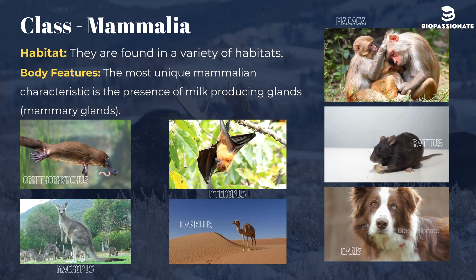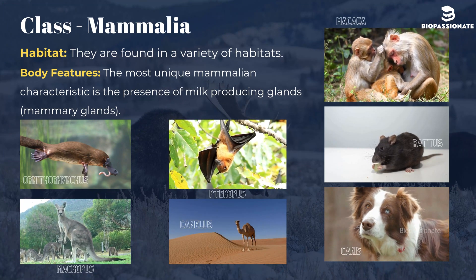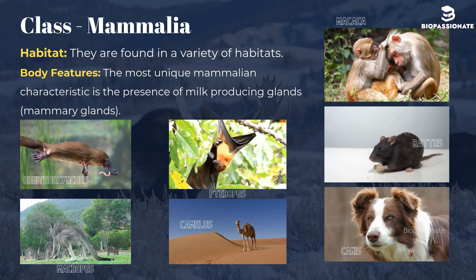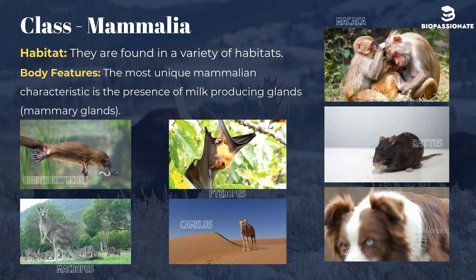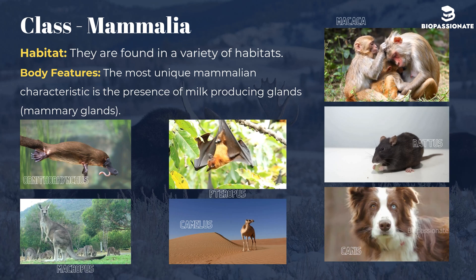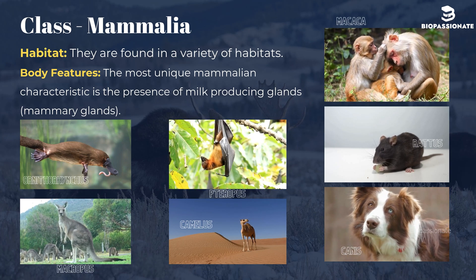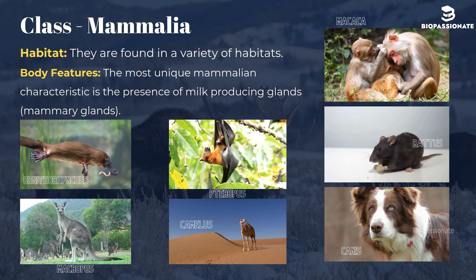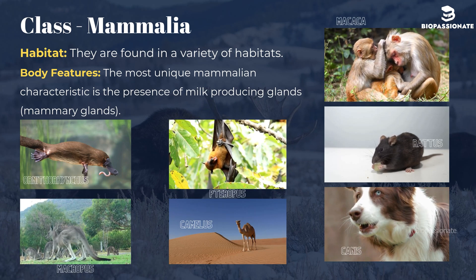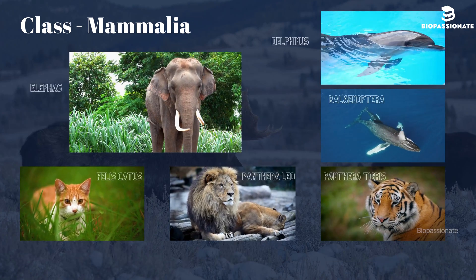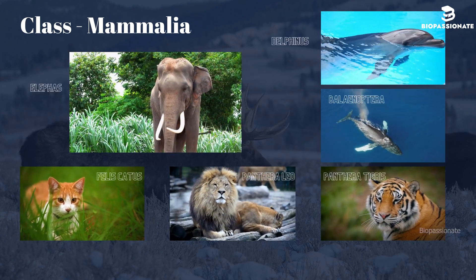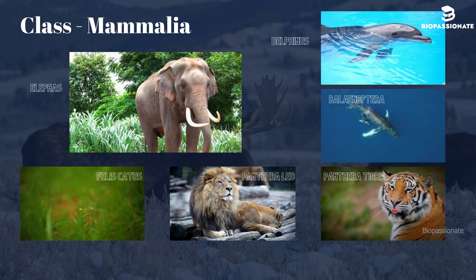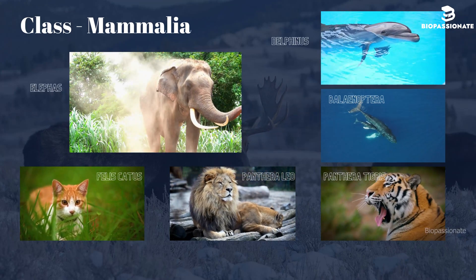Class Mammalia. They are found in a variety of habitats. The most unique mammalian characteristic is the presence of milk-producing mammary glands. Common examples are Ornithorhynchus (platypus), Macropus (kangaroo), Pteropus (flying fox), Camelus (camel), Macaca (monkey), Rattus (rat), Canis (dog), Felis (cat), Elephas (elephant), Equus (horse), Delphinus (common dolphin), Balaenoptera (blue whale), Panthera tigris (tiger), and Panthera leo (lion).